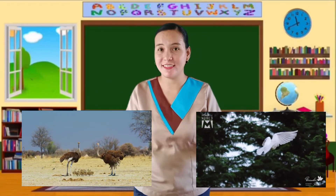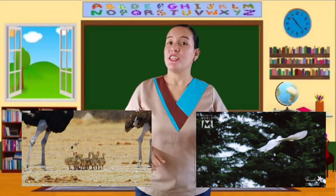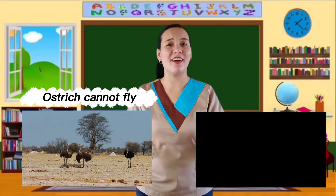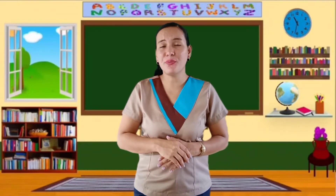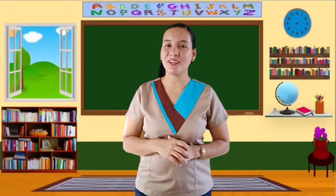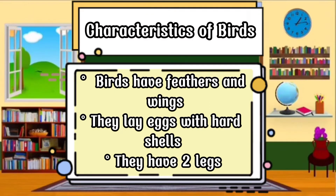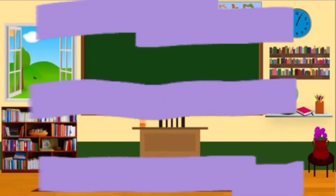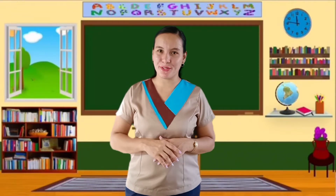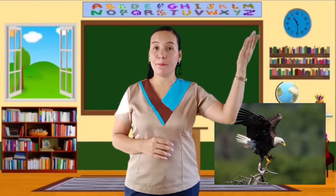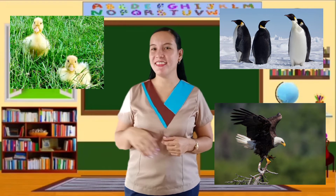What do you think the dove can do that the ostrich cannot? The dove can fly while the ostrich cannot. Most types of birds can fly, but there are birds which cannot fly. Let us now read the characteristics of birds: Birds have feathers and wings. They lay eggs with hard shells. And they have two legs. Other examples of birds are eagle, penguin, duck, and chicken.